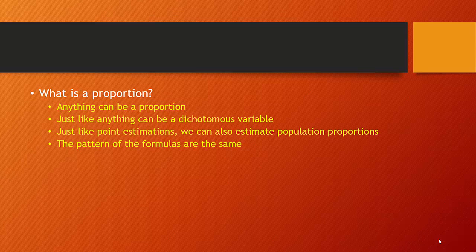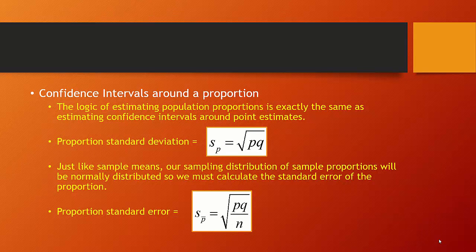And like point estimates, we're going to estimate population proportions and confidence intervals around them, and the pattern of our formulas is essentially the same. So you can see we have a formula for standard deviation, which is relatively easy. It's just the square root of the proportion in our success condition multiplied by one minus the proportion in our success condition. When we look at s equals the square root of p times q, p is the proportion in our success condition, and q is one minus the proportion in our success condition.